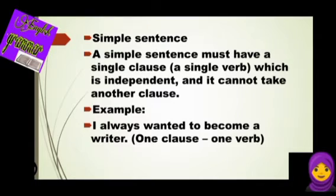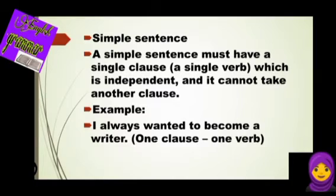Here we have some examples of a simple sentence. 'I always wanted to become a writer.' In this sentence we have one clause and one verb. So a simple sentence has one clause and one verb. For example, 'the bell rang.' In this sentence, 'the bell' is the clause and 'rang' is the verb.